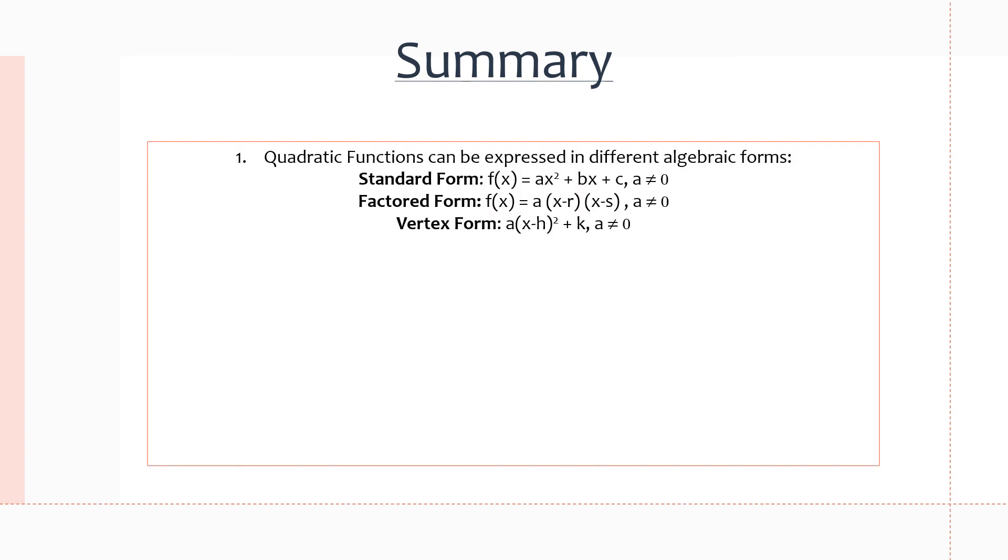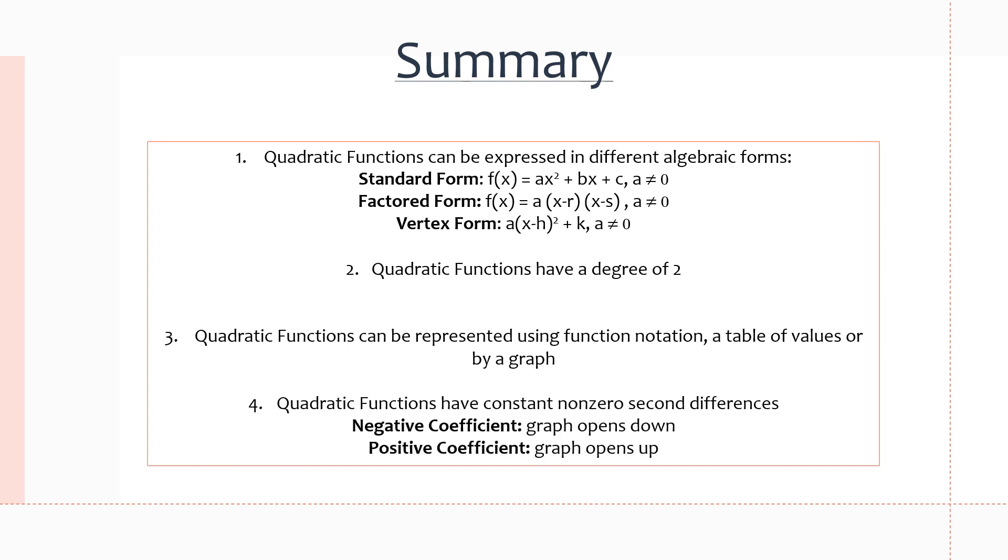So here's a quick summary of everything that we went over in this video. The first thing is quadratic functions can be expressed in different algebraic forms: standard, factored, and vertex form. In standard form, we'll mostly be working with completing the square, but factored and vertex form are the ones you would probably be using the most. A quadratic function is one of degree 2, and quadratic functions can be represented using function notation, a table of values, or by a graph. So we saw all three in the examples we covered in this video. And quadratic functions have constant non-zero second differences. So if there's a negative coefficient, it opens down. If there's a positive coefficient, it opens up. And we've seen this in previous videos, and we will see this in the next chapters when we review the difference between quadratic functions and the properties of different types of functions, like exponentials.